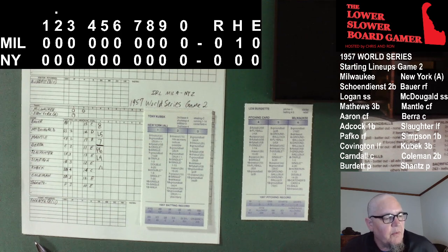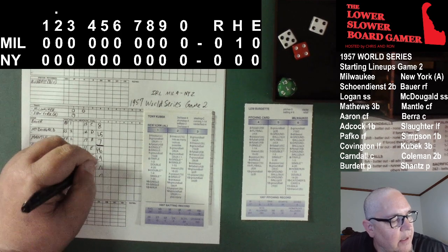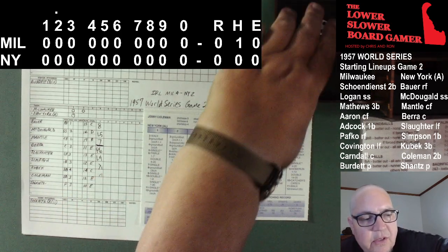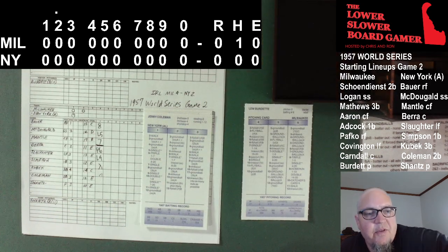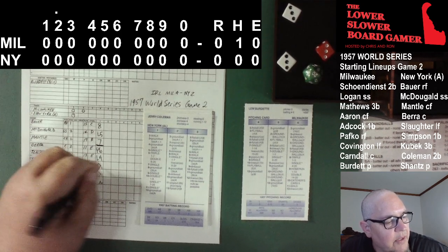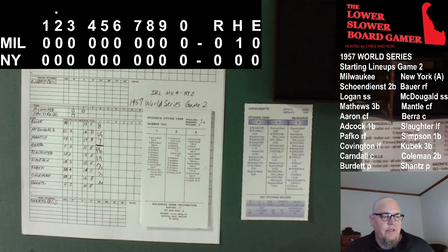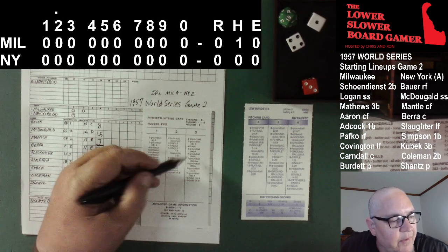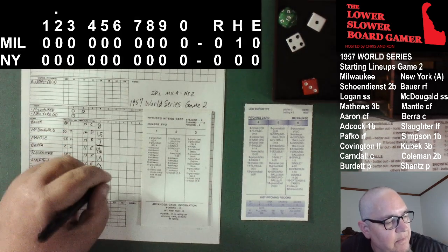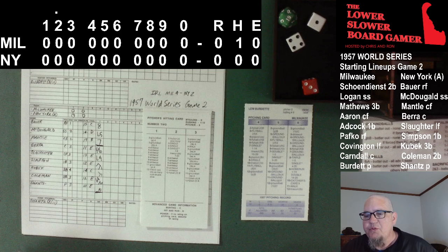Burdette looking to retire the Yankees — 4-9. A base hit for Kubek. They hold Simpson at second. Two runners in scoring position, bottom of the second. Burdette delivers — and that is a walk to load the bases. That brings up Bobby Shantz, the starting pitcher. Shantz has got a bat — 3-5. Weak ground ball chopped to Johnny Logan. Logan has no problem fielding that, flips it to Red Shane Dean for the force at second — fielder's choice. End of the inning. Two hits for the Yankees but no runs plated. Scoreless after two.